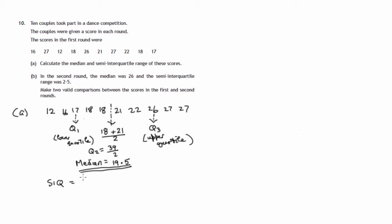So the semi-interquartile range, semi gives you a clue that you're halving. The range is the difference between the upper and the lower quartiles, Q3 minus Q1.